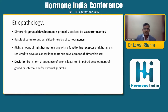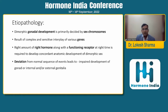What are the causes of DSD? Dimorphic gonadal development is primarily decided by sex chromosomes, and several autosomal genes also play a part in gonadal development. After gonads have developed in the embryo, the right hormone at the right time with a functioning receptor will give rise to normal internal and external genitalia, resulting in normal dimorphic sex. Any deviation from this cascade — from sex chromosomes to genes to the right hormones — will result in DSD.